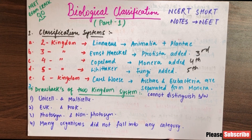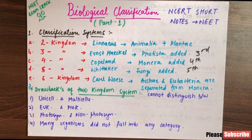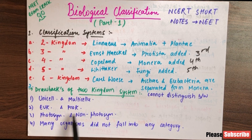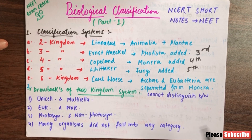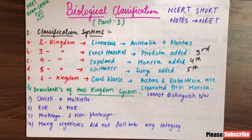The drawbacks of the 2-kingdom system: first, it did not distinguish between unicellular and multicellular organisms. Second, it could not distinguish between eukaryotes and prokaryotes. Third, photosynthetic and non-photosynthetic organisms could not be distinguished. Fourth, many organisms did not fall into either category — some organisms shared features of both Plantae and Animalia.